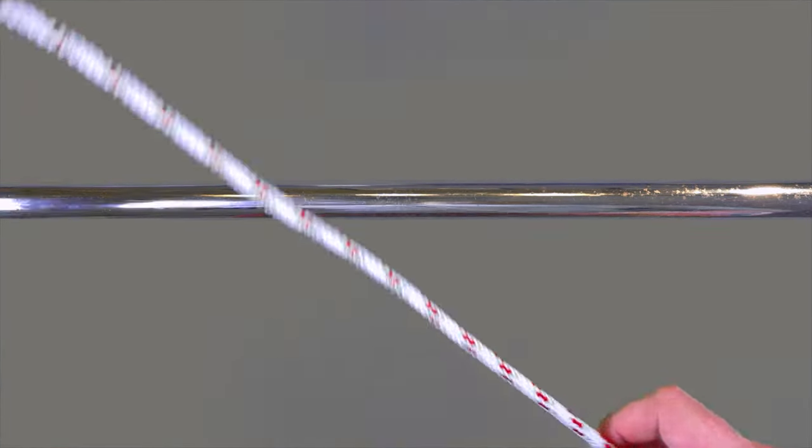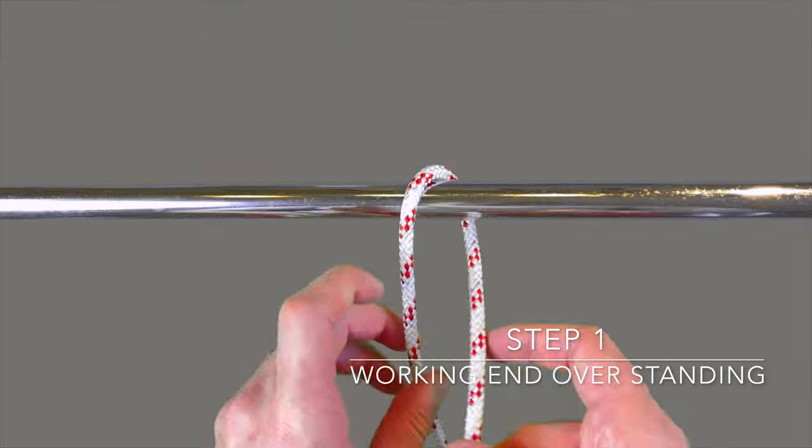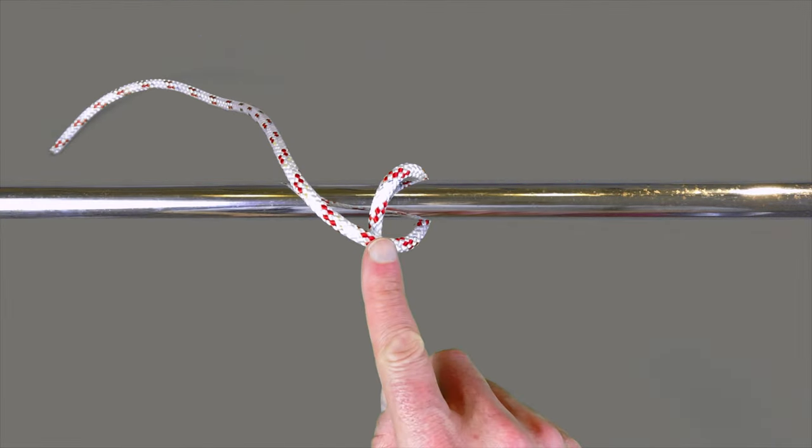Step one: take your working end over the top of the item you're going to hitch to, wrapping it over the top of the standing end.